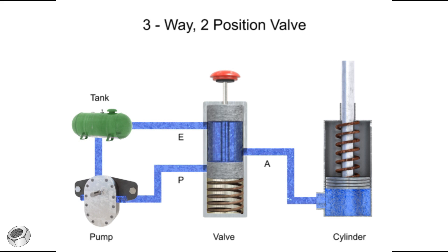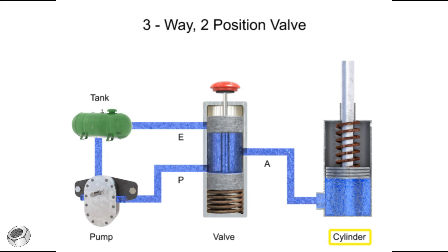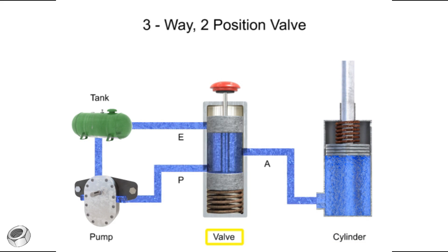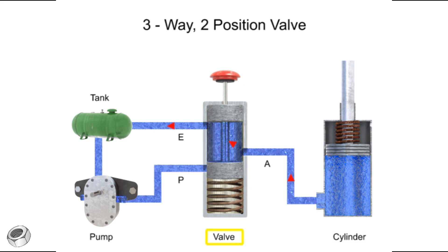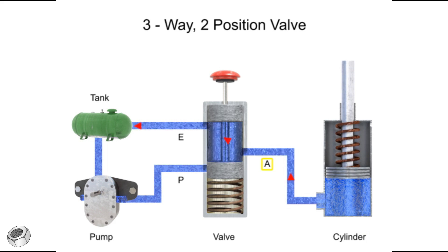Three-way directional control valves have many applications in fluid systems. One of the most common is the control of single-acting cylinders. In this application, fluid is pumped from a tank to pressure port P. With the valve in the normal position, fluid is blocked. When the valve is actuated, fluid flows from pressure port P through outlet port A to the cylinder, which extends and remains extended until the valve changes positions. When the valve de-energizes, the spool returns to position one, pressure port P is blocked, exhaust port E is opened, and the cylinder retracts — fluid flows from the cylinder through port A and out exhaust port E, returning to the tank.